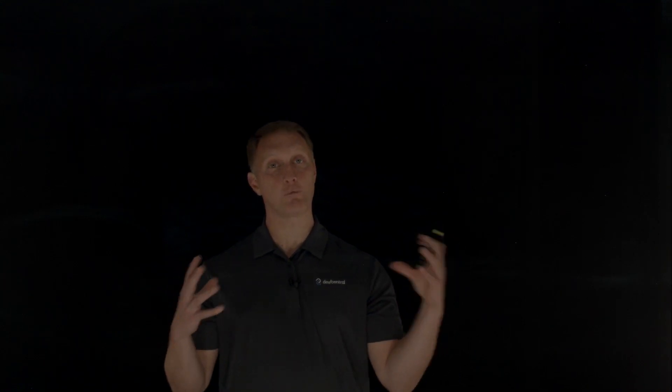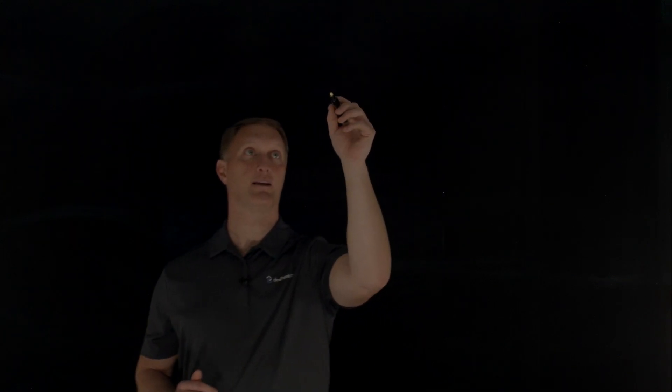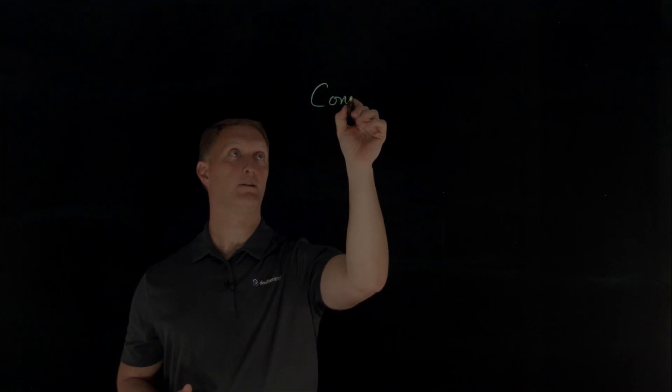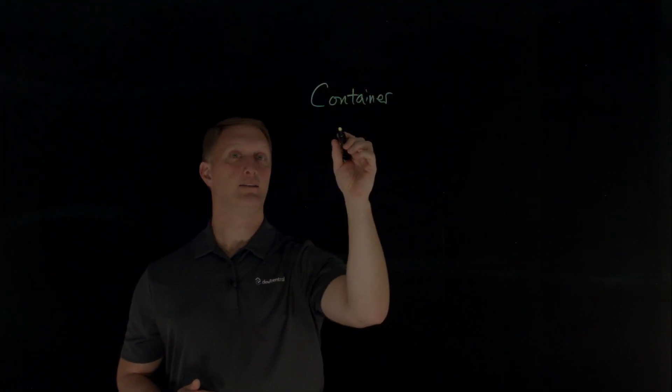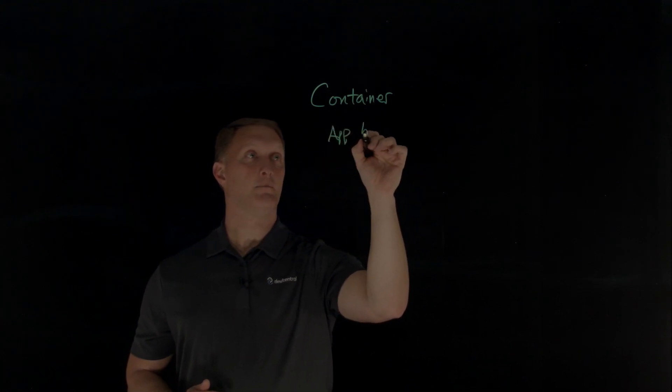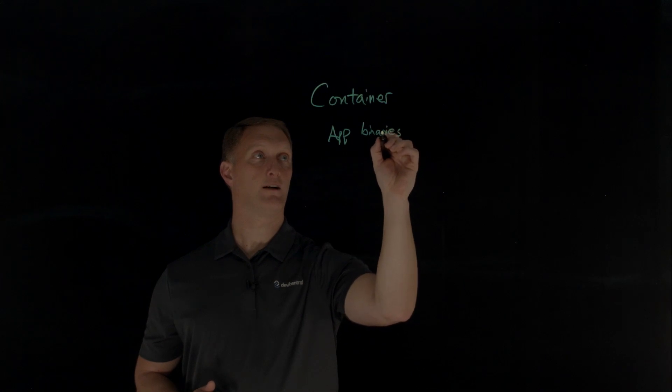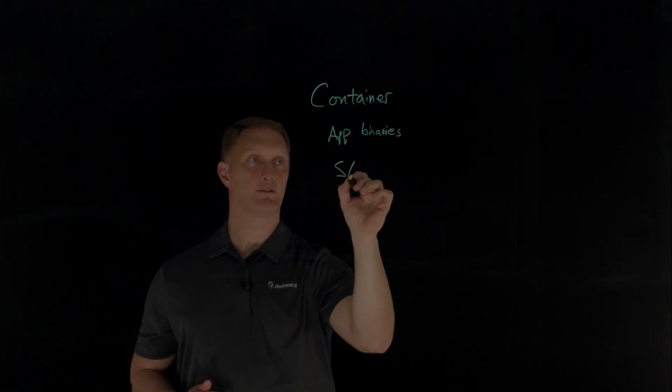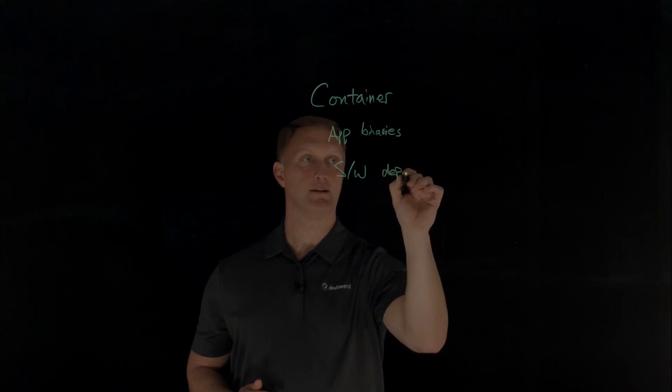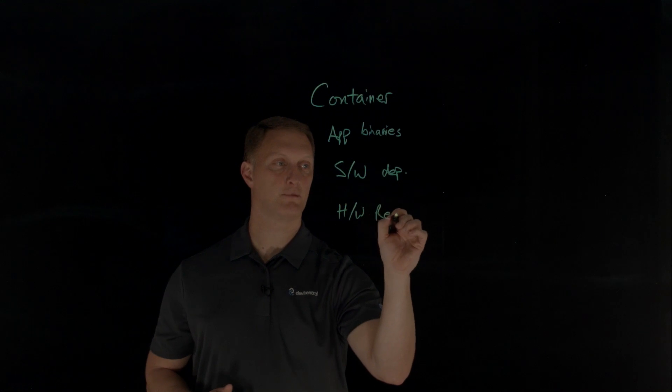An application container is a standalone, all-in-one package for a software application. The container is going to include application binaries, plus the software dependencies, and the hardware requirements that are needed to run this application — all wrapped up into an independent, self-contained unit. Here's a quick picture of what an application container consists of: the binaries required, the software dependencies, and then the hardware requirements.